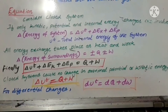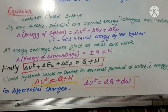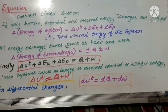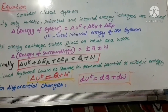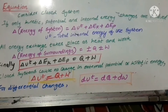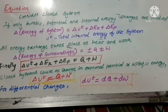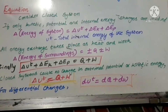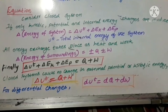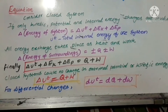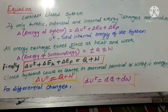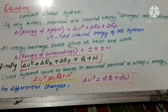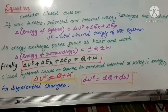For delta of energy of surroundings, we consider that all energy exchange between the system and surroundings takes place as heat and work. So delta of energy of surroundings equals plus or minus Q plus or minus W, depending on whether the transfer is from system to surroundings or vice versa. Combining both, delta Ut plus delta Ek plus delta Ep equals Q plus W, based on modern convention.